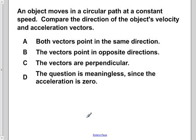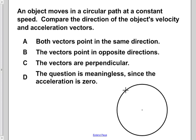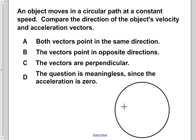The first thing we're going to do is draw out the situation described. We have some object following a circular path — we'll say it is a ball. I'm going to place the ball here. We know that the object is moving around the circular path at a constant speed.